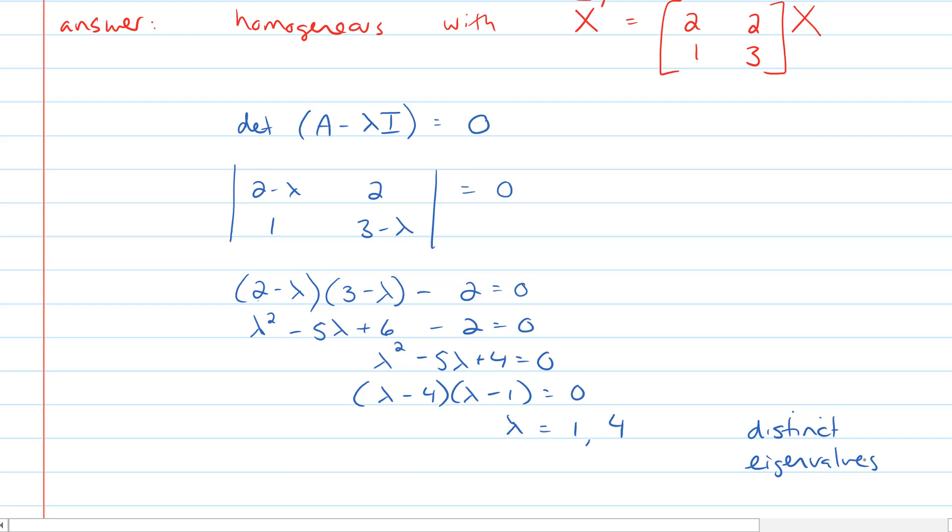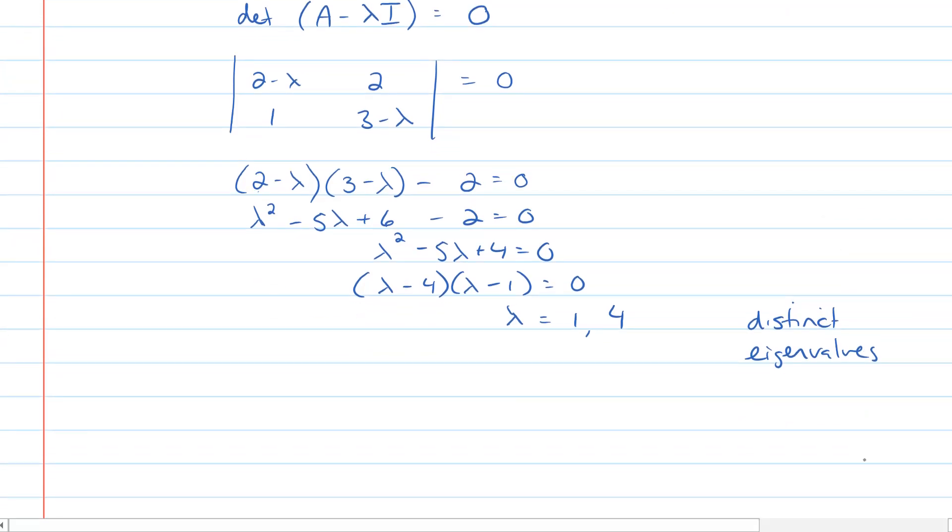If instead we had, for our characteristic equation, we got lambda minus 4 all squared, that would be repeated eigenvalues. These are also real, so that's good. And then we say, in order to find the eigenvectors, that A minus lambda I onto k is equal to the 0 vector.